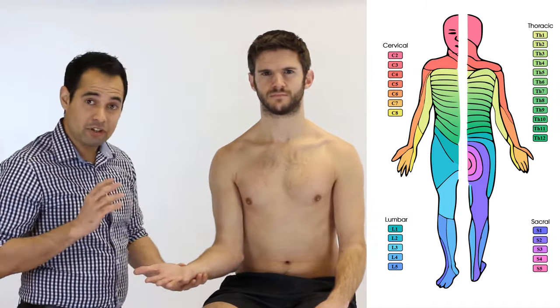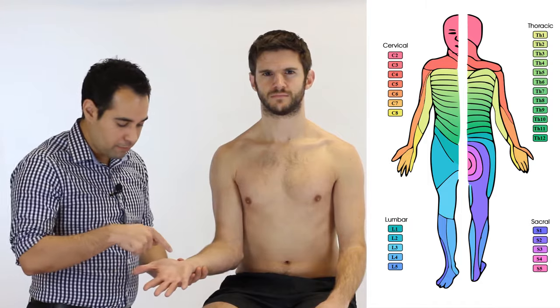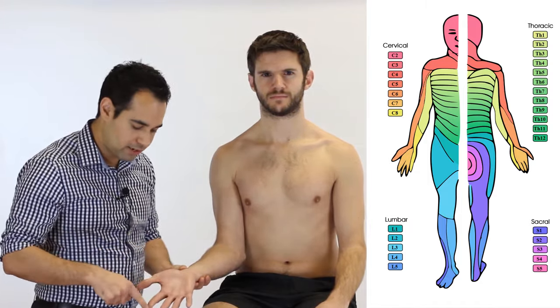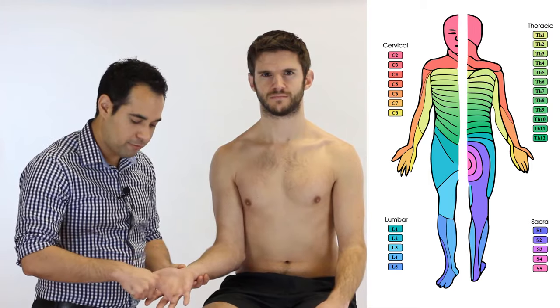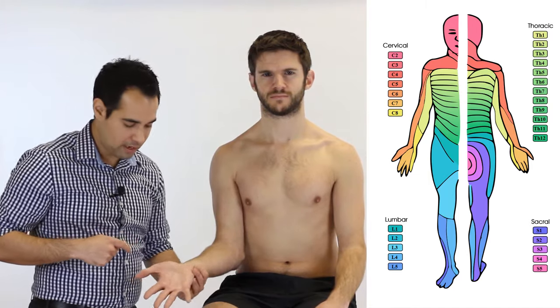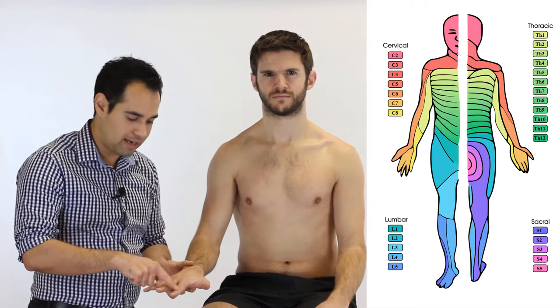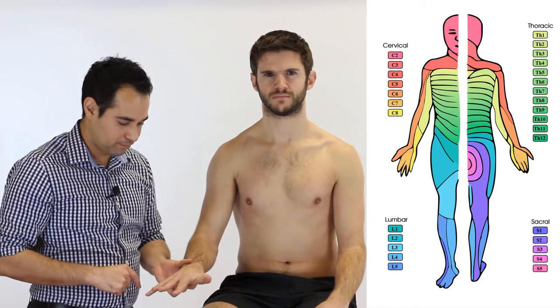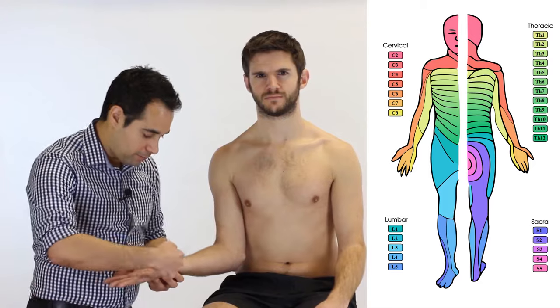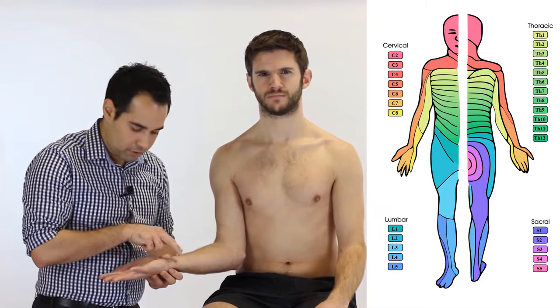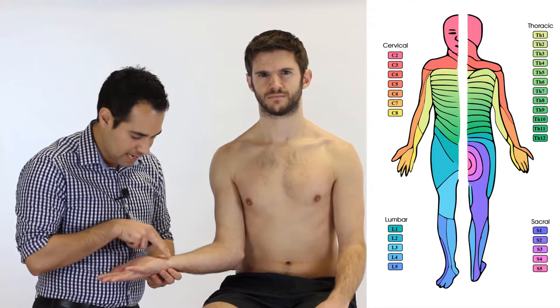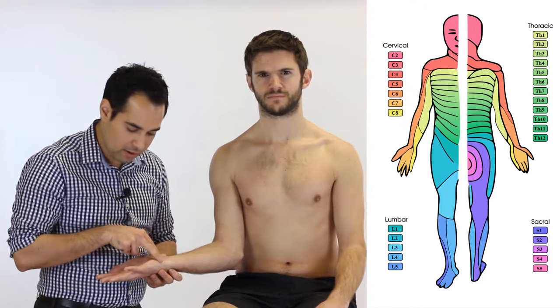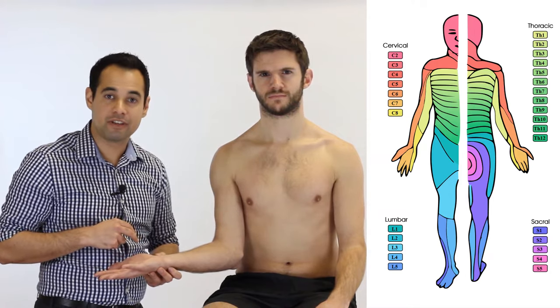C7 is a smaller dermatomal region from the centre of the palm through to the second, third and fourth digits, anteriorly as well as on the dorsum of the hand. C8 runs from the ulnar styloid directly across to the tip of the fifth digit.